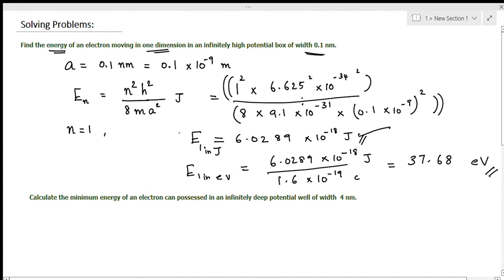The energy is 6.0289 × 10⁻¹⁸ joules in joules, and 37.68 electron volts in electron volts.